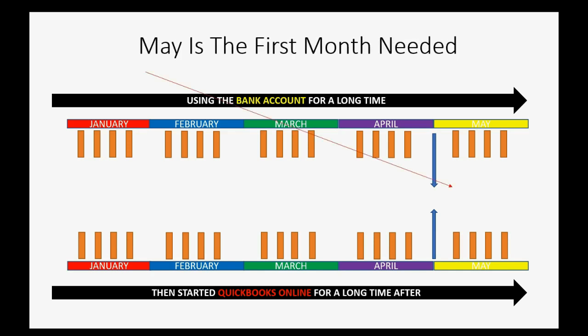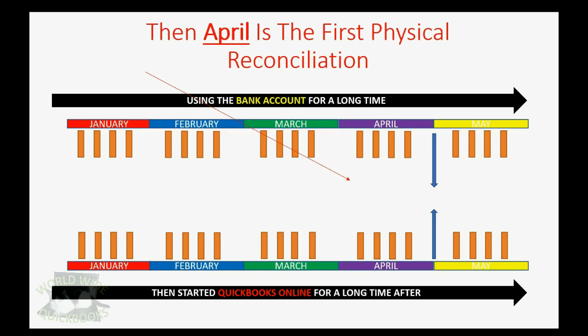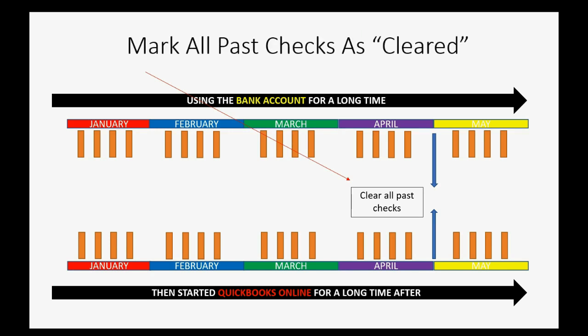So let's imagine that May is the first month that we need to make correct. Therefore, April is the first physical bank reconciliation that we do. When we go to do April's reconciliation, the first thing we do is clear all past checks and deposits by marking them as cleared. We do this because we are assuming that all past checks have cleared. You may well ask: how can we assume that all past checks and deposits or any other transactions have actually cleared the bank?